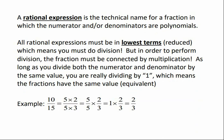All rational expressions must be written in lowest terms, or they need to be reduced. But in order to perform division whenever we have fractions, they must be connected by multiplication. As long as you divide both the numerator and the denominator by the same value, then you're really dividing by 1, which means the fractions have an equivalent value.